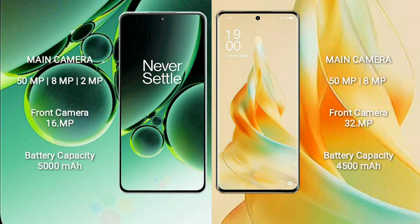The OnePlus Nord 3 features a rear triple camera setup: 50 megapixel plus 8 megapixel plus 2 megapixel, and a 16 megapixel front camera. The OPPO Reno 9 Pro features a rear dual camera setup: 50 megapixel plus 8 megapixel, and a 32 megapixel front camera.